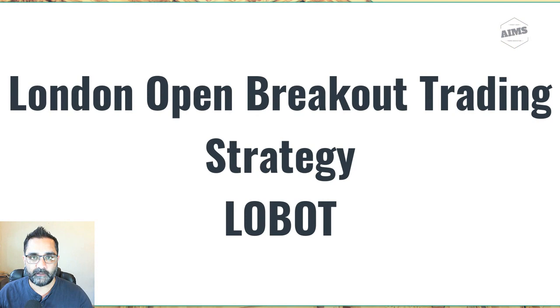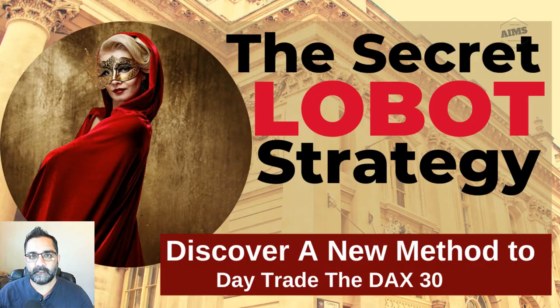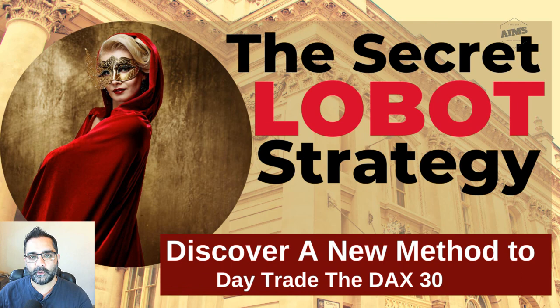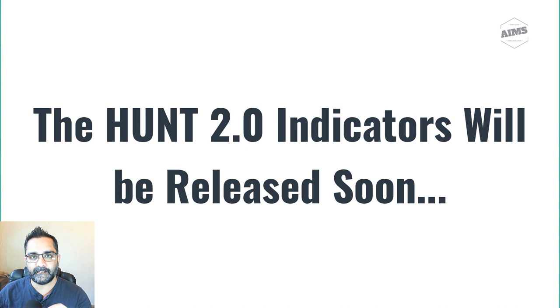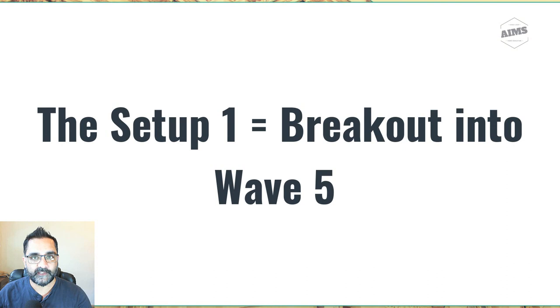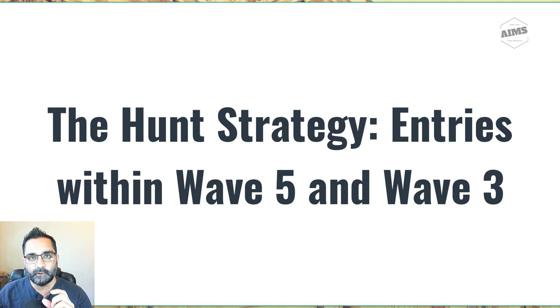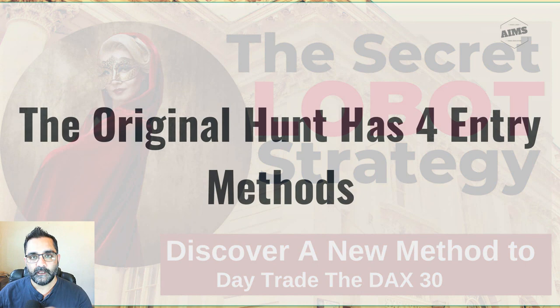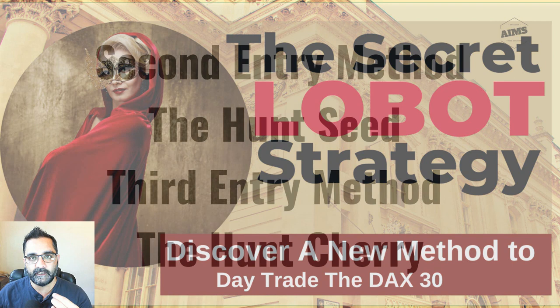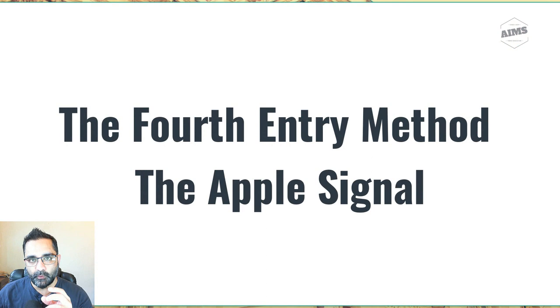We recently launched a new strategy called the Low Bot strategy — Low Bot stands for London Open Breakout Trade. It started as a single trade but evolved as we kept trading it. We applied the hunt strategy and developed Hunt 2.0, a pullback method. We have a core strategy called Setup 1, then the seed method, the hunt strategy, and at Level 3 of the AIMS training process you trade the hunt strategy, which has four entry methods: Setup 1, Setup 2, Hunt Seed, Hunt Cherry, and the Apple setup.